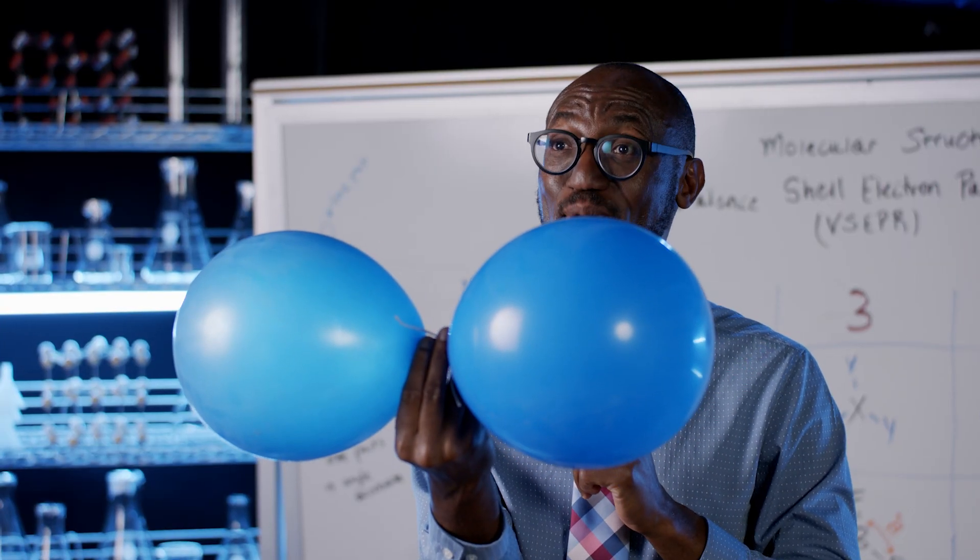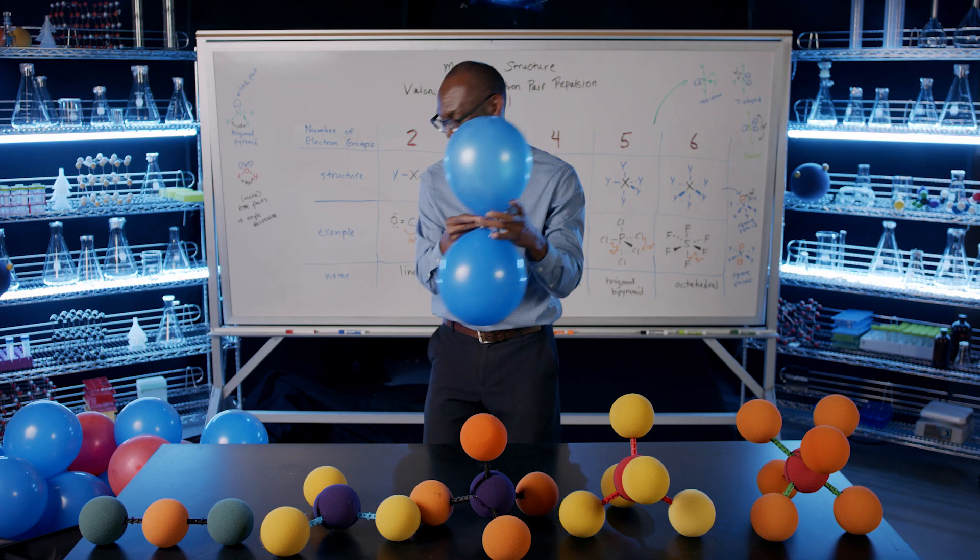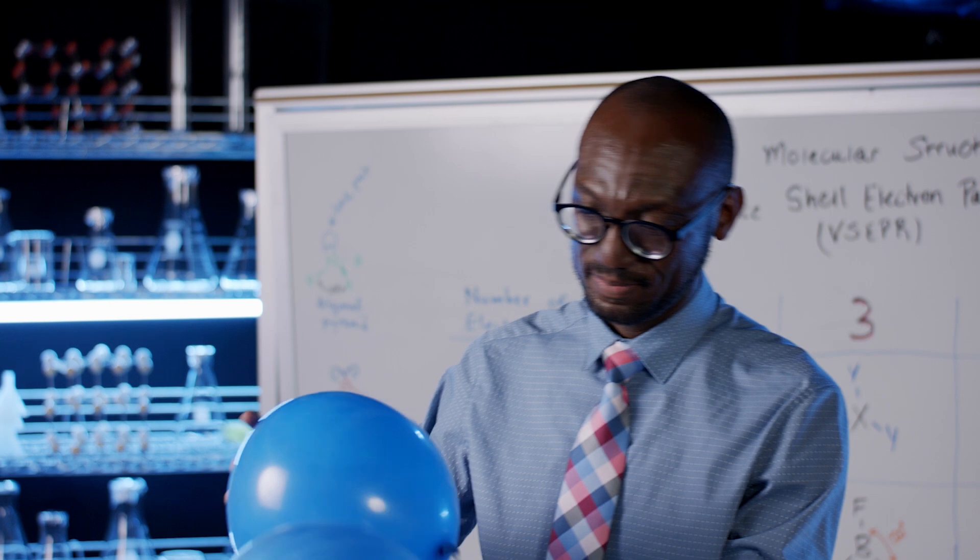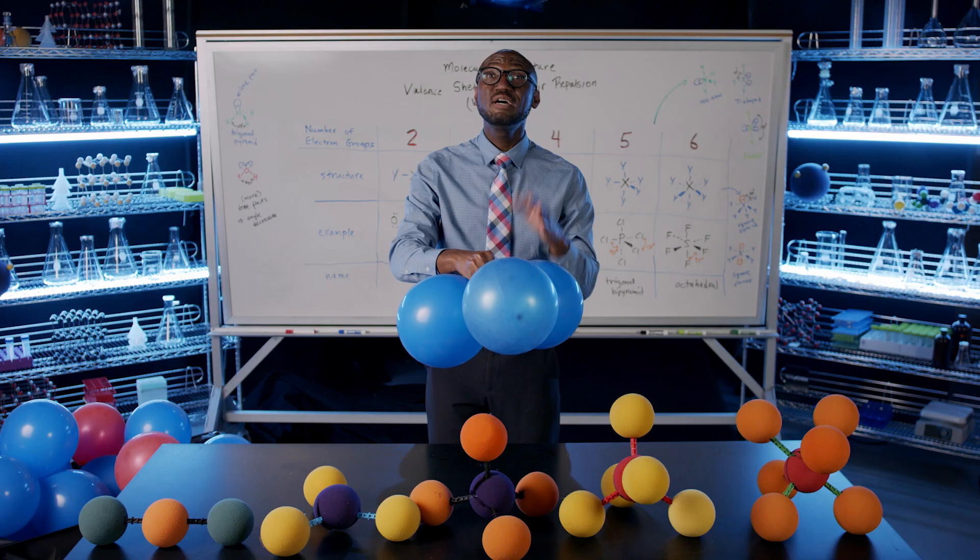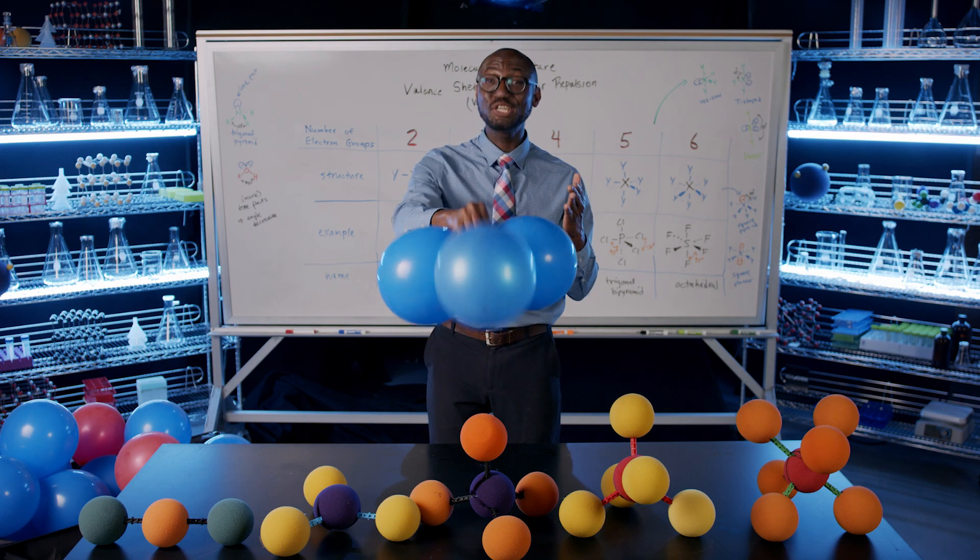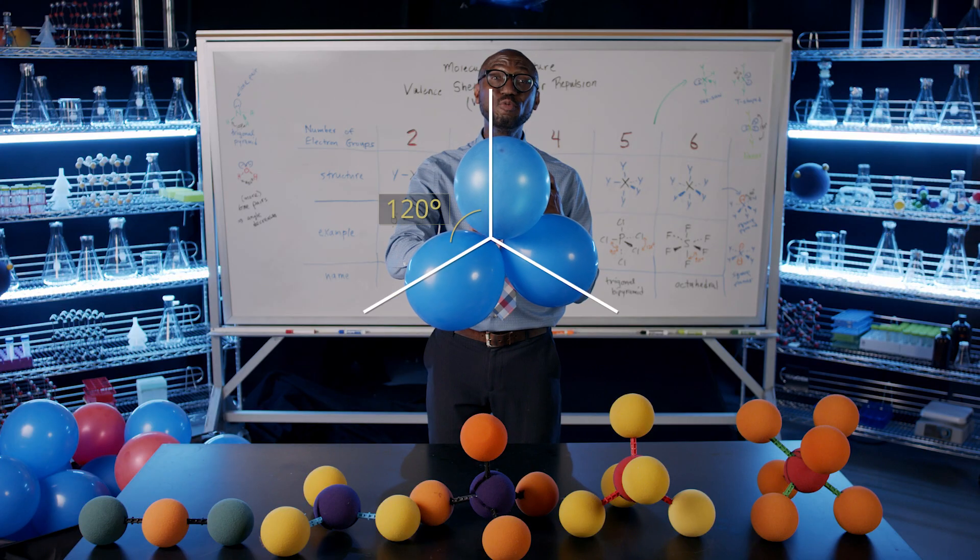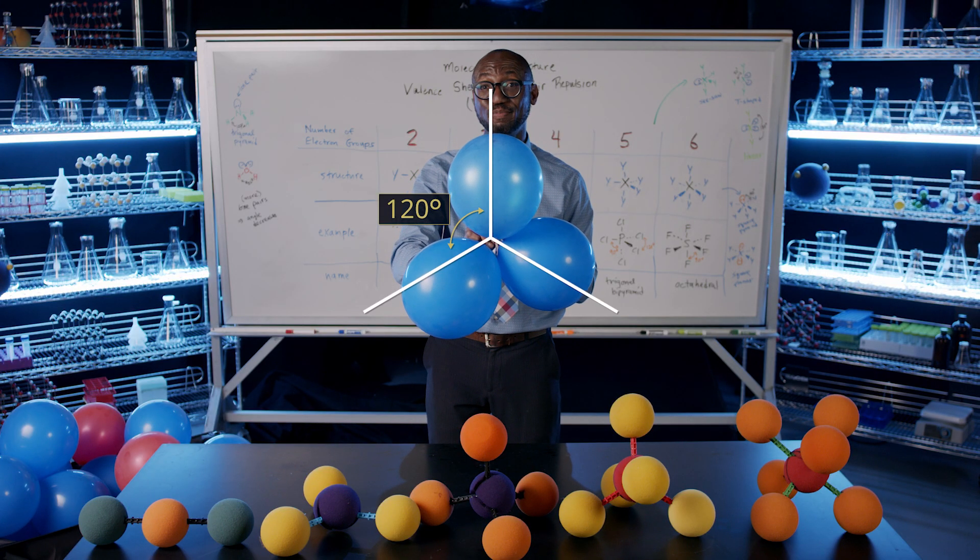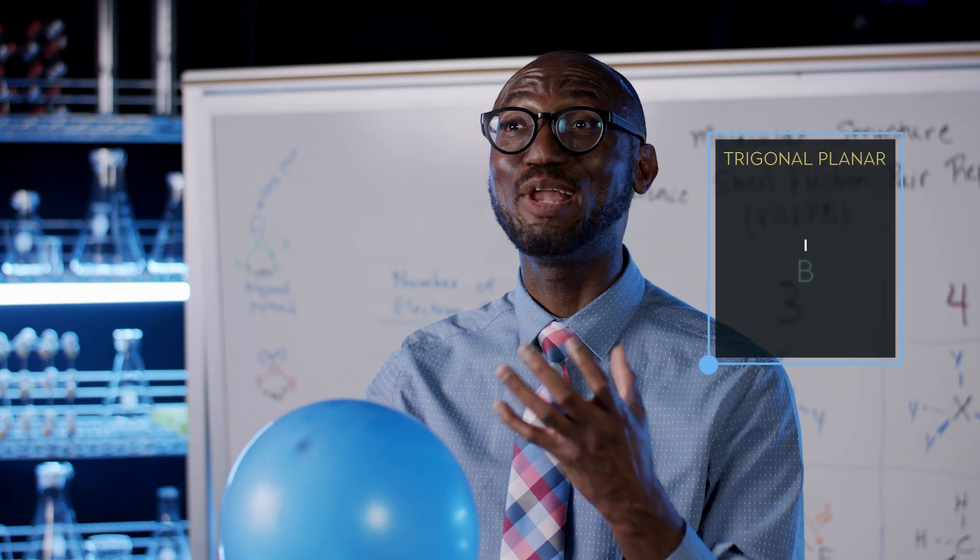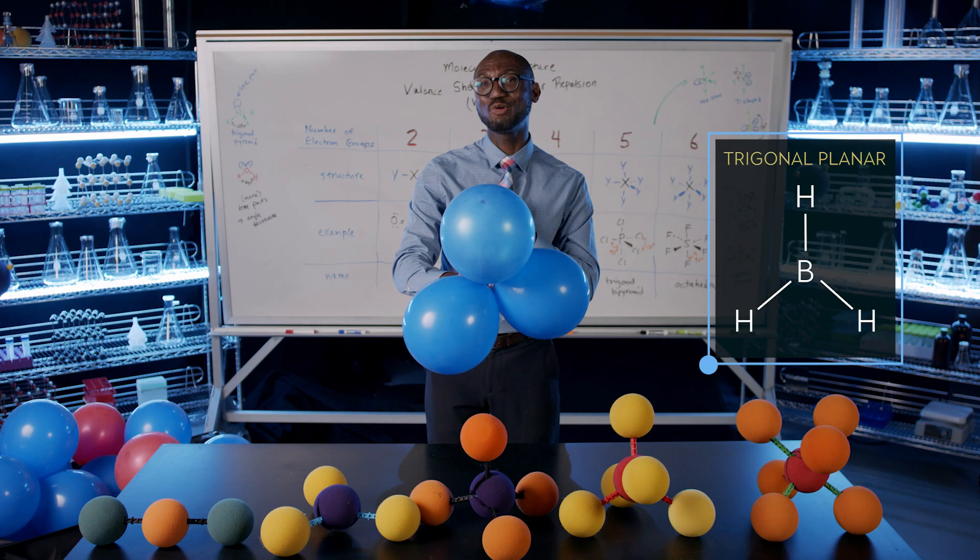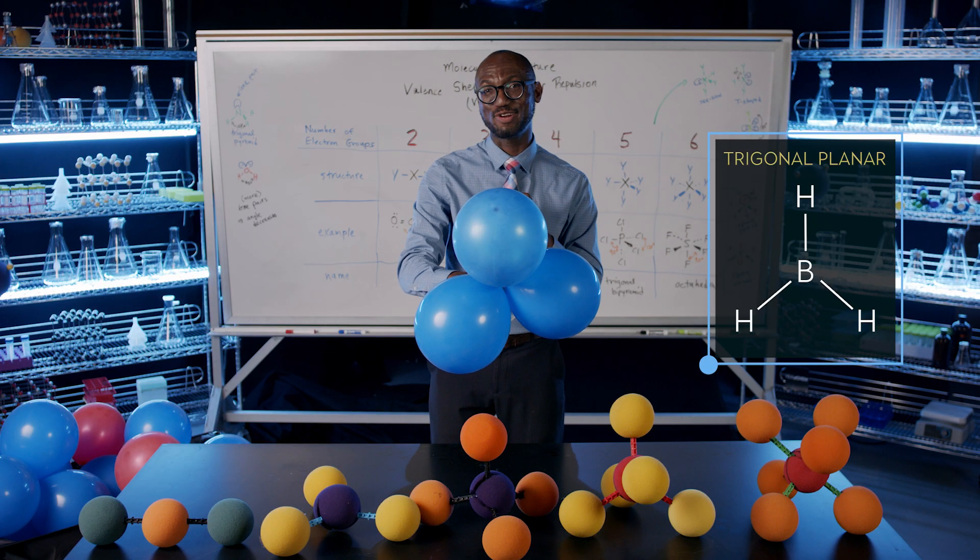Now, let's move to three electron groups by adding a third balloon. The system now looks like a flat triangle, which we call trigonal planar. The electron groups are at 120 degrees from each other. We can represent this as a big molecular model as well. Here is a real example, boron trihydride.